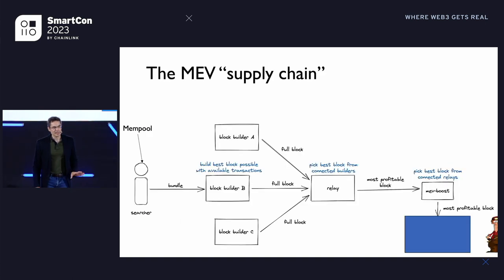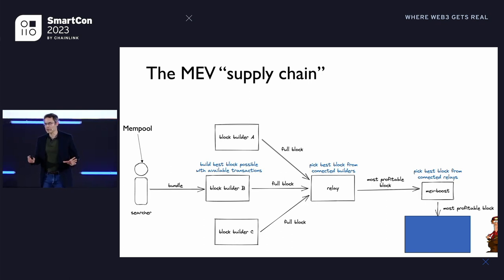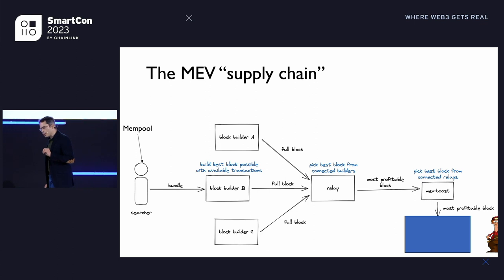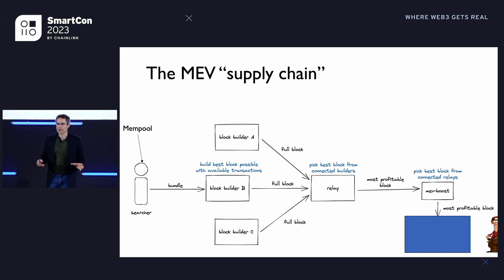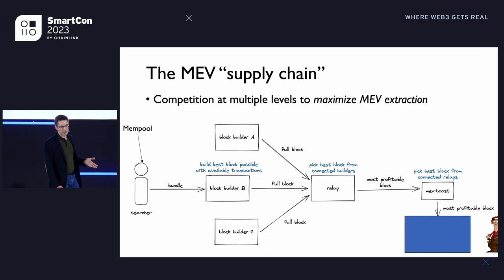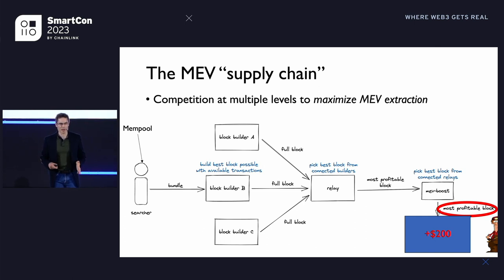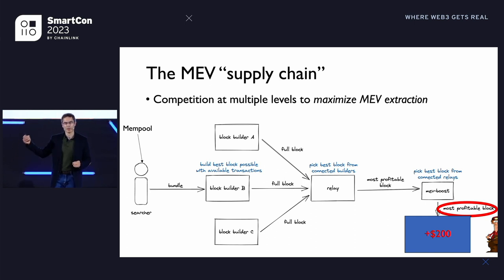Today, the ecosystem around MEV is quite complicated. There are a bunch of players who work together in what's known as the MEV supply chain. Validators don't construct blocks themselves typically, but rather the entities in the supply chain construct blocks and try to extract as much MEV as possible. Much — in fact most of that MEV — gets returned to the validator as a kind of bribe or reward to pick up a particular block. So you have competition at multiple levels among these entities, trying to maximize MEV extraction and return as much as possible to the validator to get their particular block taken up.